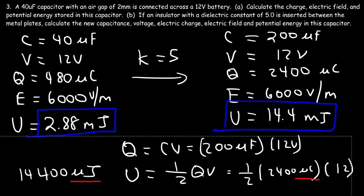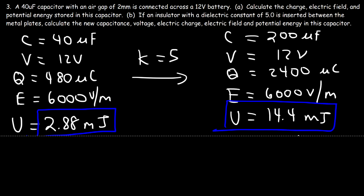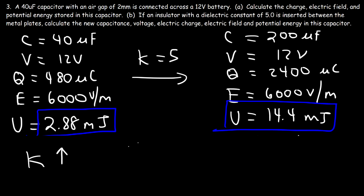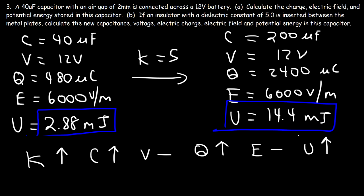To summarize: if the capacitor remains in contact with the battery and we increase the dielectric constant, the capacitance will increase, the voltage will stay the same, the charge will increase, the electric field will stay the same, and the potential energy will increase. Nothing decreases if you keep the capacitor connected to the battery.